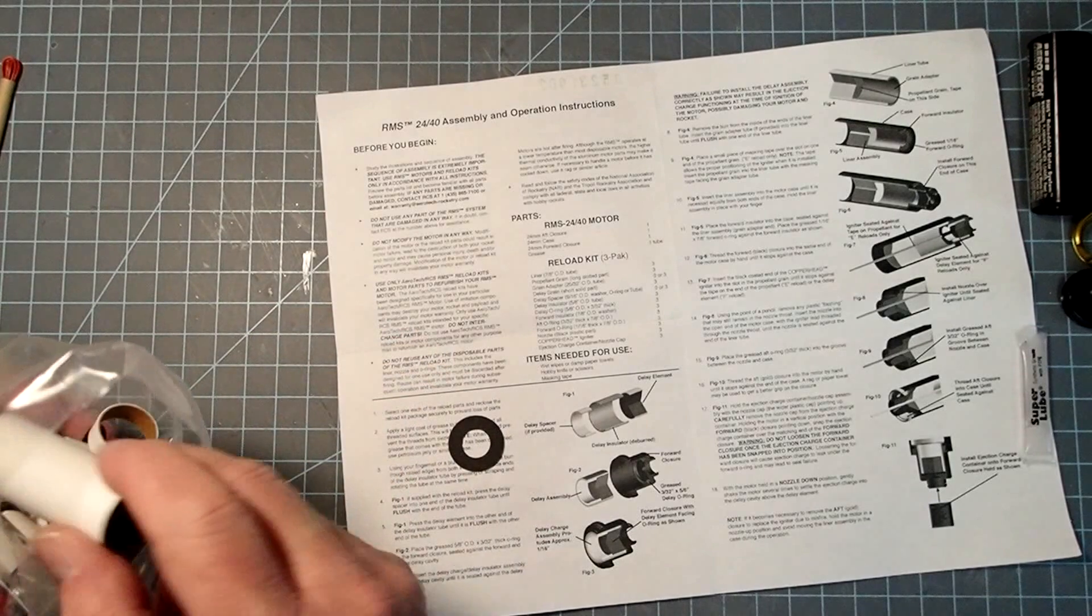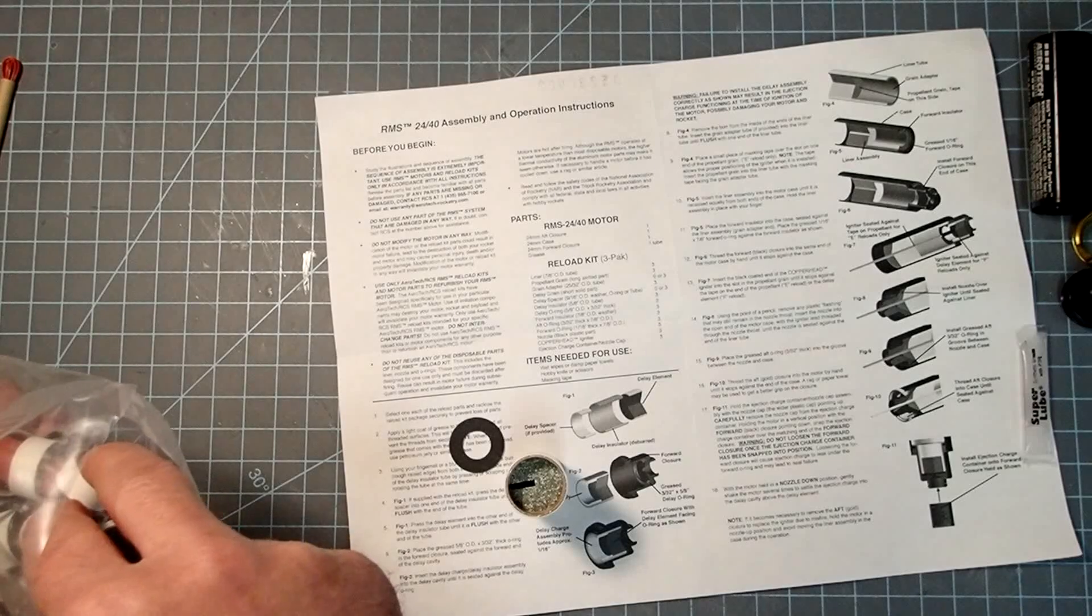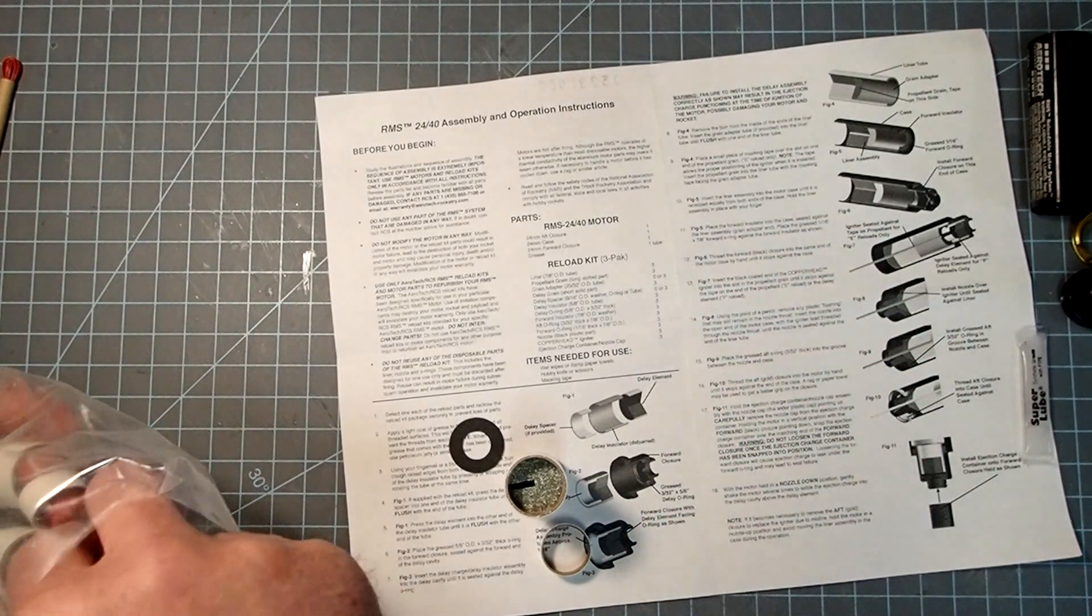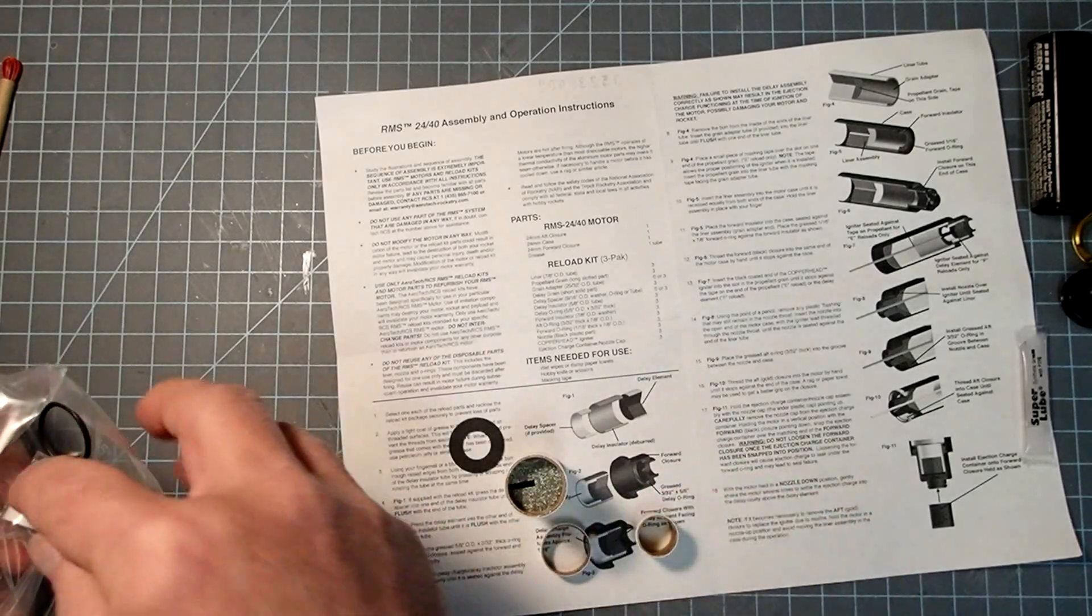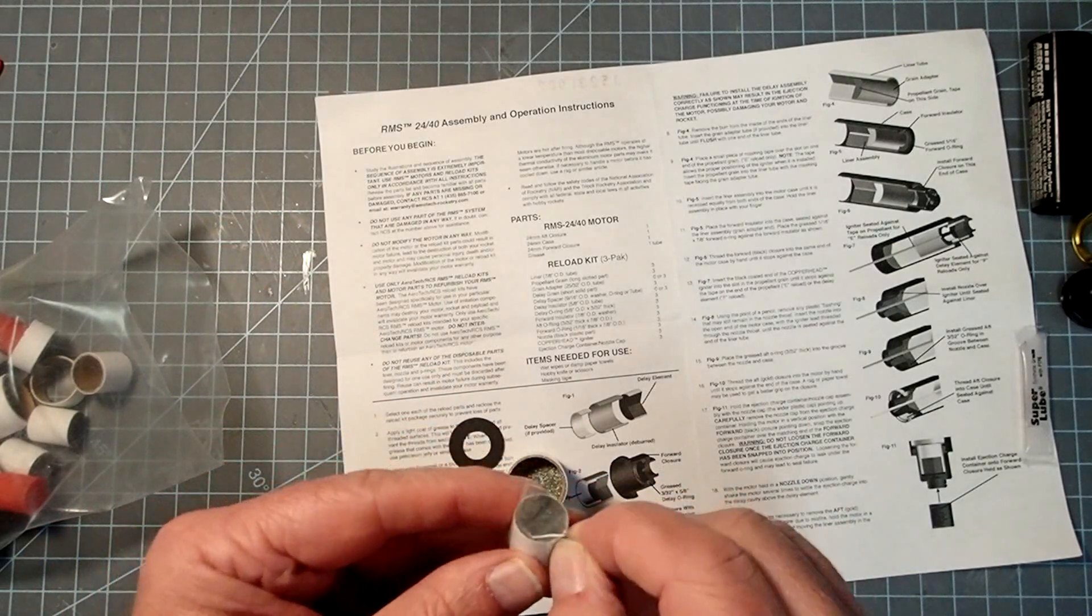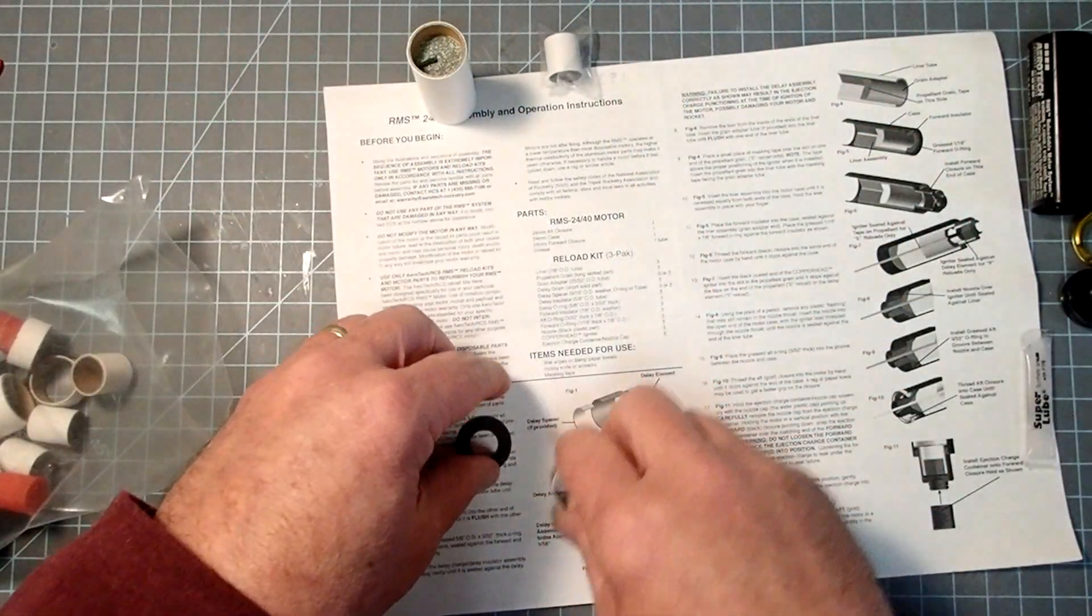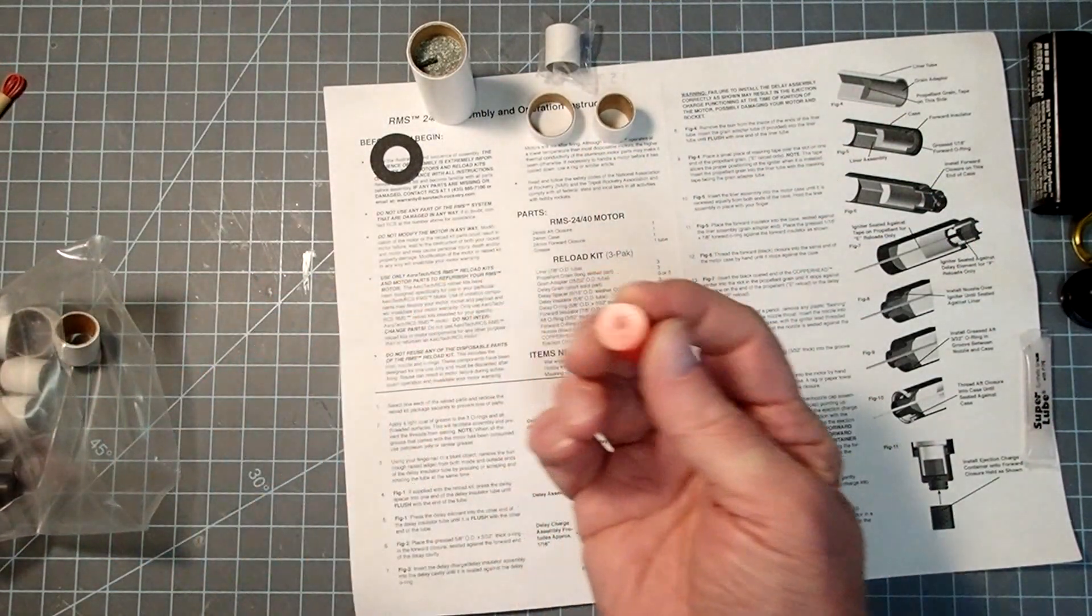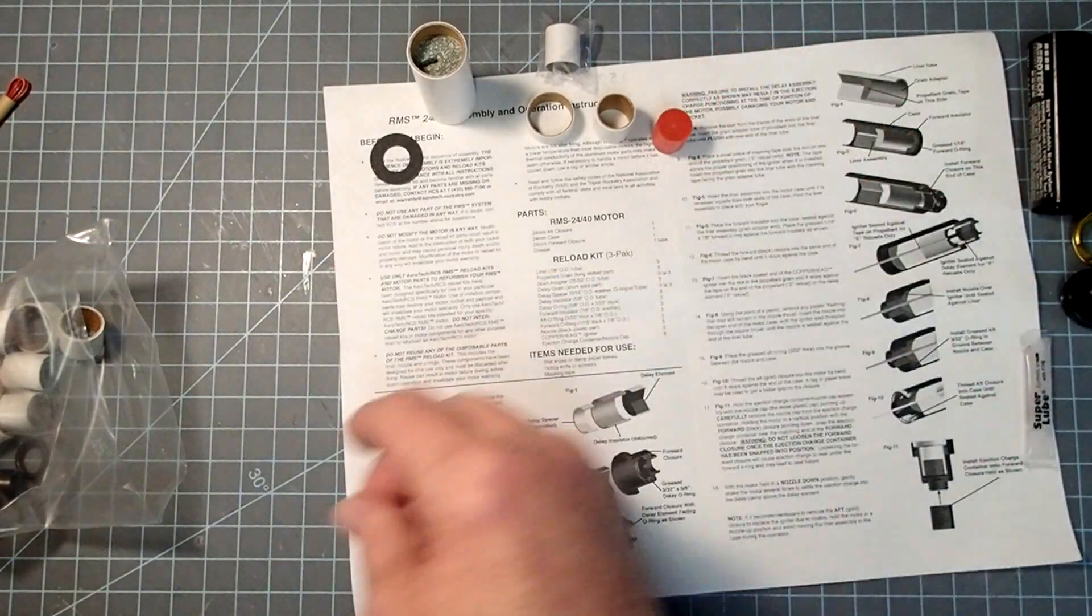That's an insulator for the forward section. Here's our propellant charge, and that looks like a spacer there. Then we have a delay insulator. The delay charge itself is in its own little package here.